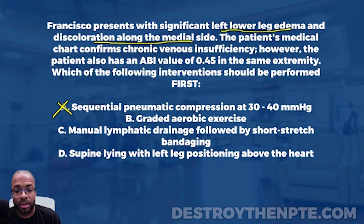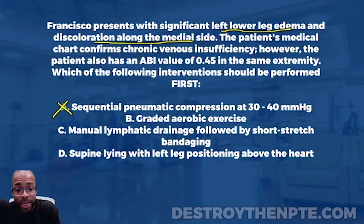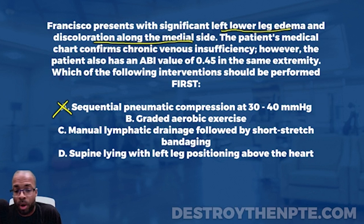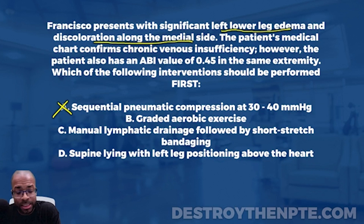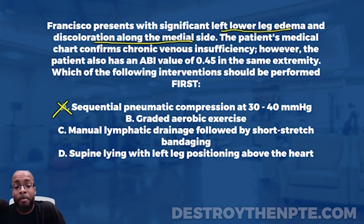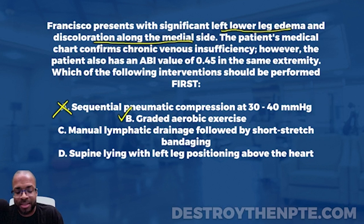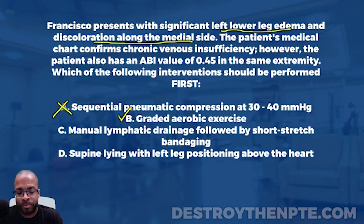Answer B is graded aerobic exercise. Since we know we should address the arterial insufficiency first, is graded aerobic exercise a good intervention? Yes — helping to improve blood flow to the lower extremities and improving overall walking distance is exactly what we want to do for arterial insufficiency. I like this one. I'll put a check mark next to it — doesn't mean it's the right answer yet, but it's a strong candidate.